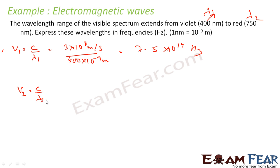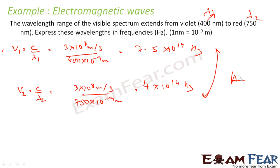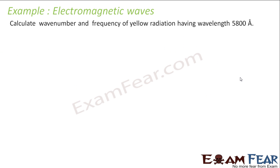Similarly, ν₂ = c/λ₂ = 3 × 10⁸ / (750 × 10⁻⁹) = 4 × 10¹⁴ Hz. So the frequency of the visible spectrum ranges from 4 × 10¹⁴ Hz to 7.5 × 10¹⁴ Hz. Easy one.